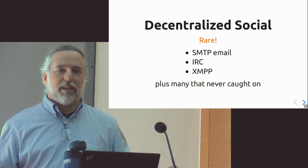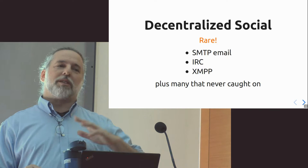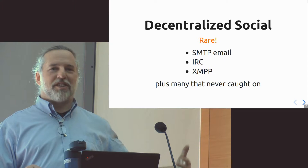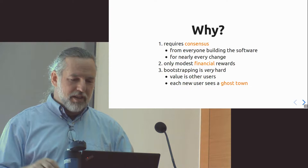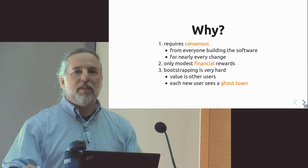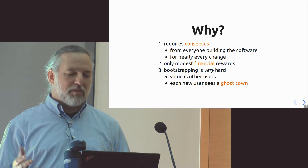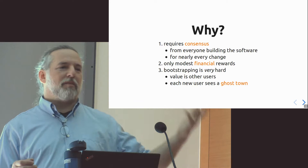So we get very few things that are decentralized and social. Things I could think of: email, IRC, and XMPP are examples. There's a Wikipedia page listing 50 or 60 decentralized social projects, basically all of which you've never heard of, because they didn't catch on. Why is it they don't catch on? One thing is that if you have a bunch of different systems talking together, they all have to speak the same protocol, so you need agreement from everyone who's implementing these systems.